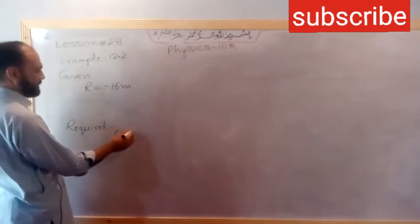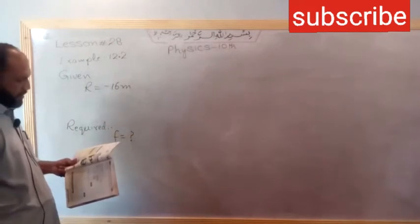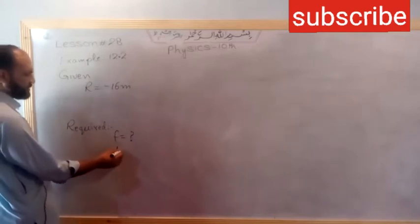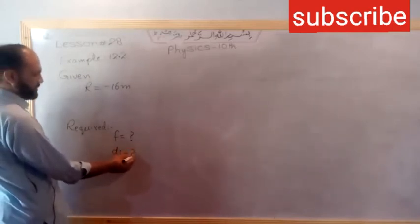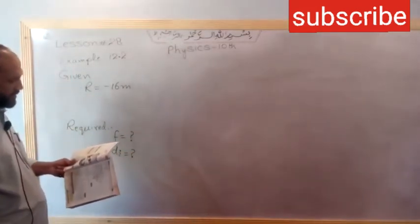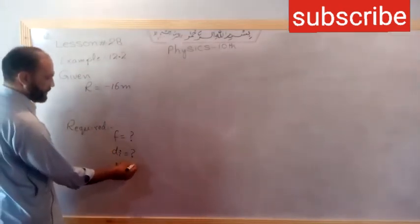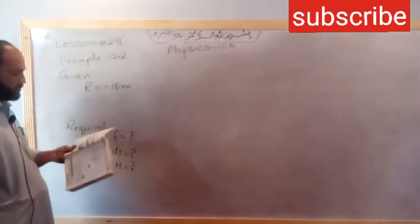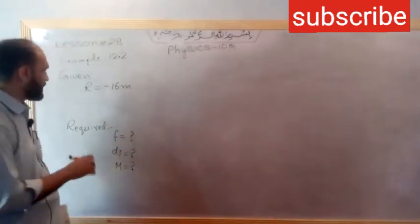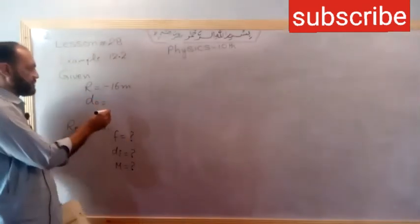Focal length F. Location of image - the distance of the image. We will see its magnification.